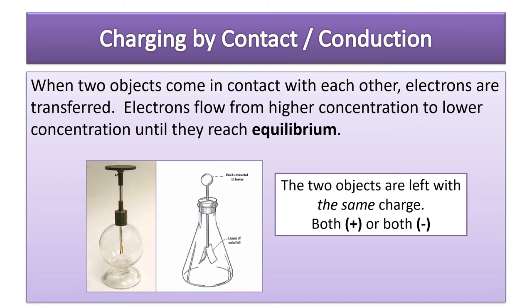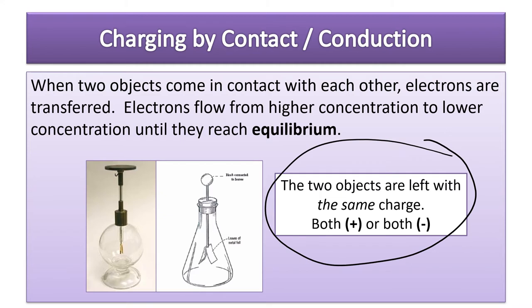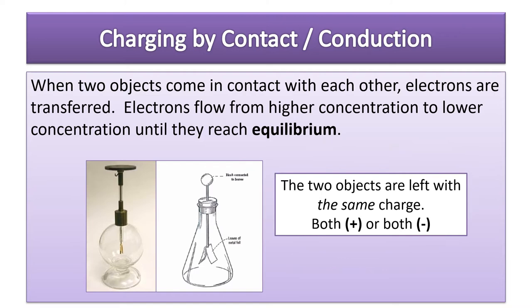Let's talk about charging by contact, otherwise known as conduction. When two objects come in contact with each other, electrons are transferred. Electrons flow from higher concentration to lower concentration until they reach equilibrium — the charges all want to spread out as far away from each other as possible. For contact, the two objects are left with the same charge, unlike friction and induction. They'll either both be positive or both be negative.